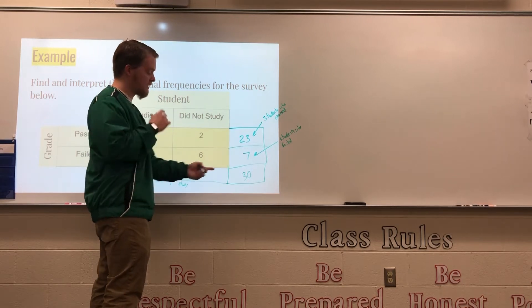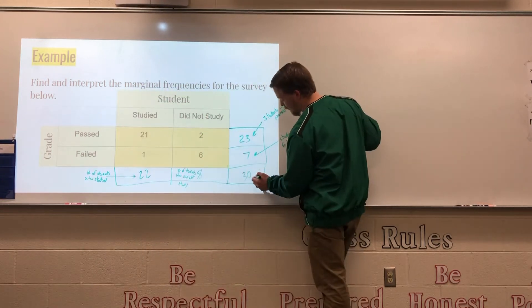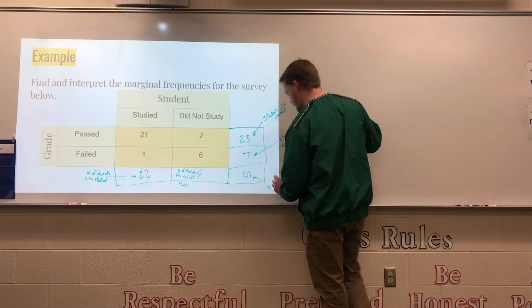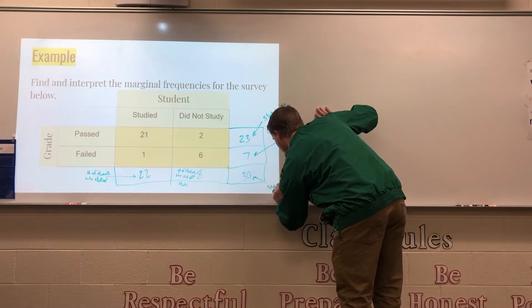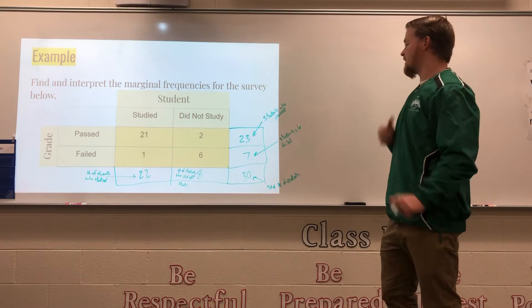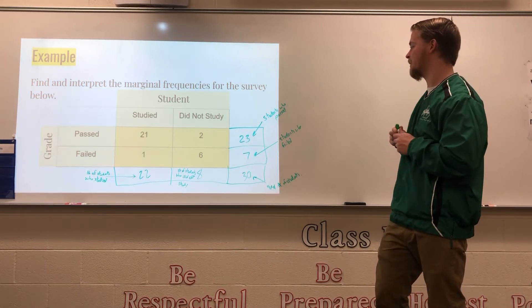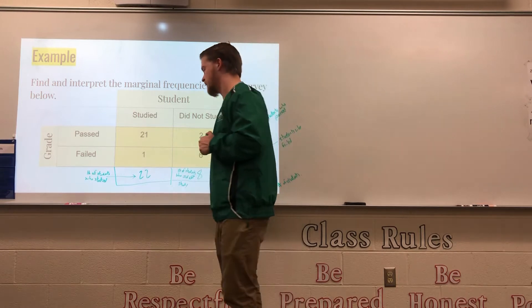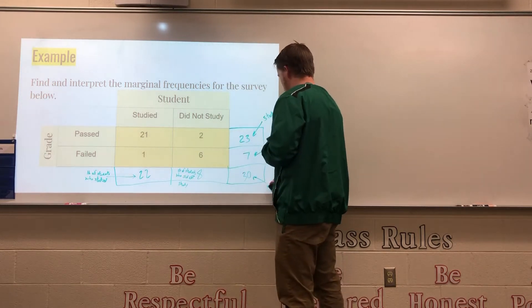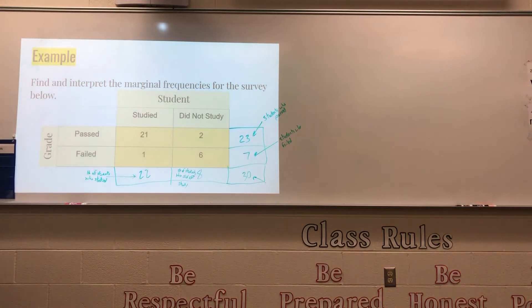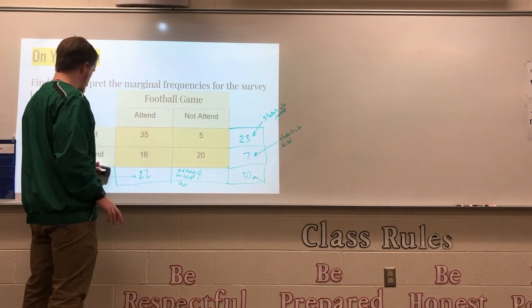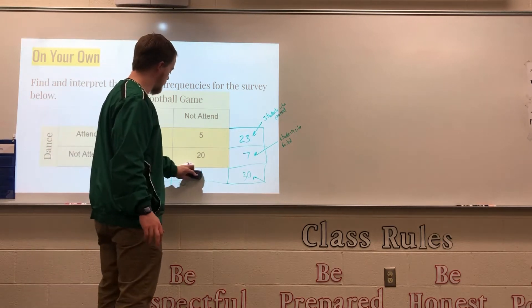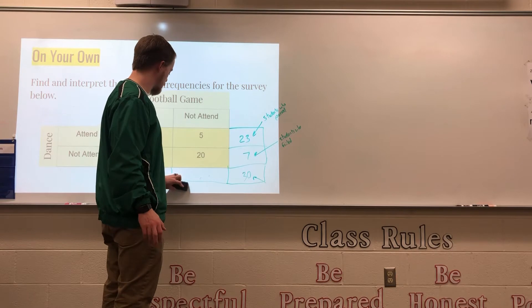And 30 is just your overall total number of students. That is how we find and interpret the marginal frequencies — we take each row or column and add them up. Now I want you to try one of these on your own. Copy that table down and try to find and interpret your marginal frequencies.